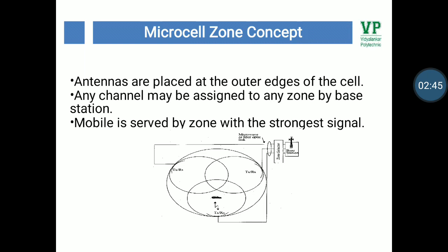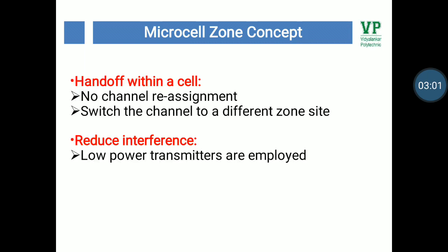In the microcell zone concept, antennas are placed at the outer edges of the cell. Any channel may be assigned to any zone by the base station, and the mobile is served by the zone with the strongest signal. The figure shows the microcell zone concept. Handoff within a cell occurs with no channel reassignment — it simply switches the channel to a different zone site. Low power transmitters are employed to reduce interference.